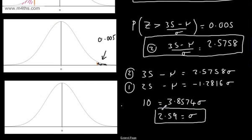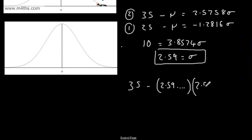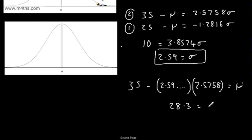Substituting sigma back into equation 2 to find mu: 35 minus 2.5758 times 2.59 gives mu = 28.3, correct to 3 significant figures. So mu equals 28.3 and sigma equals 2.59. Basic work with simultaneous equations — you decide how you want to solve them, but you should arrive at these answers correct to 3 significant figures.